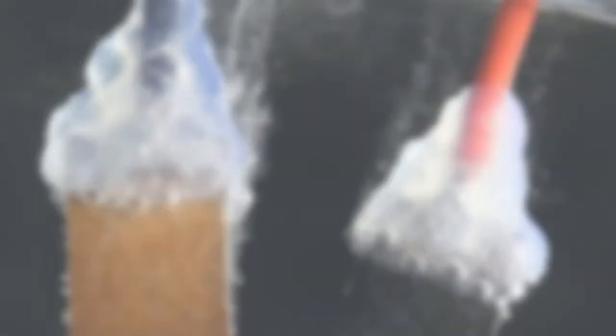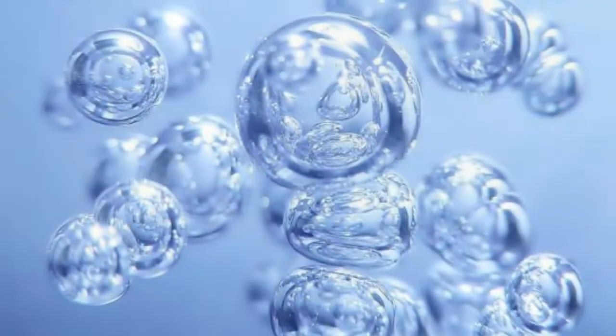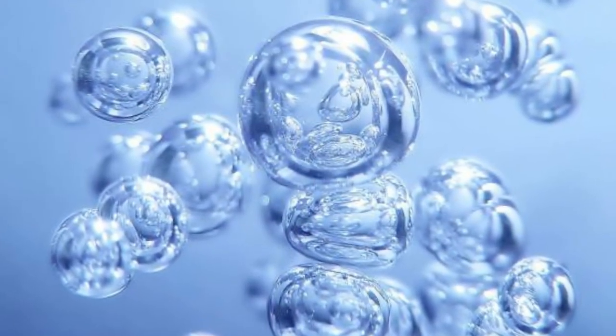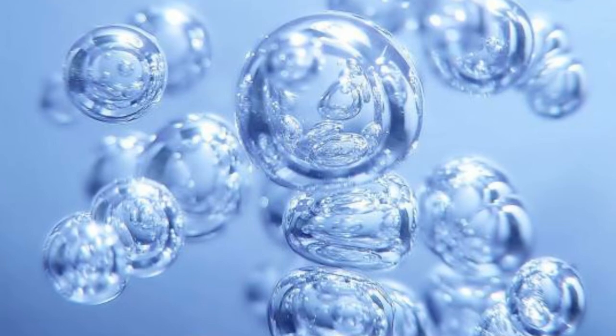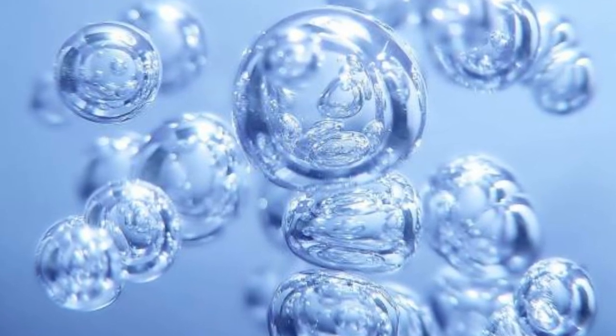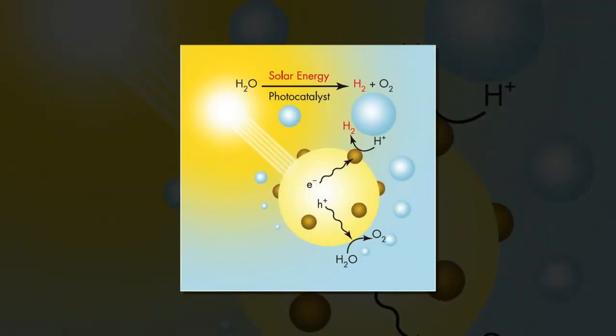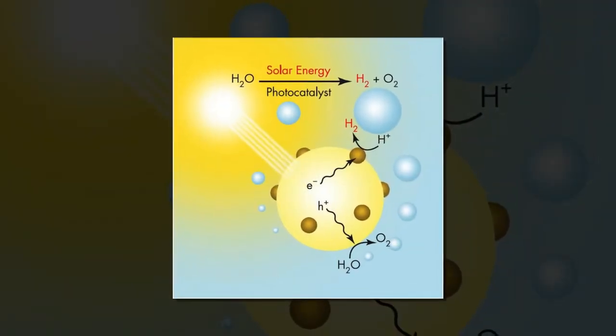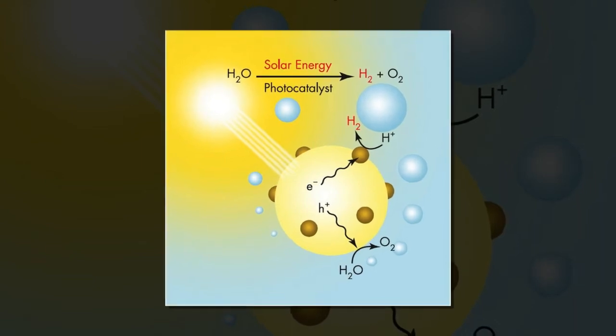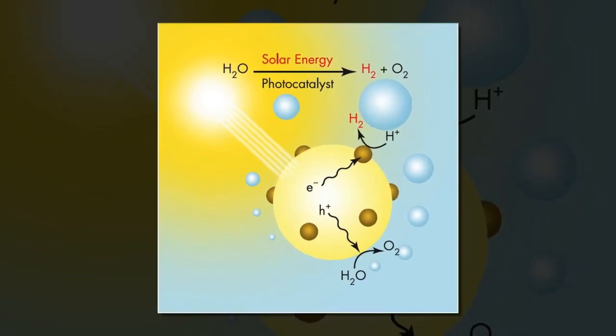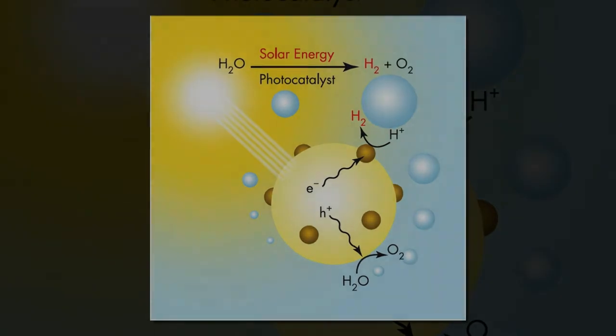In the new study, the researchers showed that the reduction half-reaction can be achieved with perfect efficiency on specially designed 50 nanometer long nanorods placed in a water-based solution under visible light illumination. The light supplies the energy required to drive the reaction forward, with the nanorods acting as photocatalysts by absorbing the photons and in turn releasing electrons needed for the reaction.